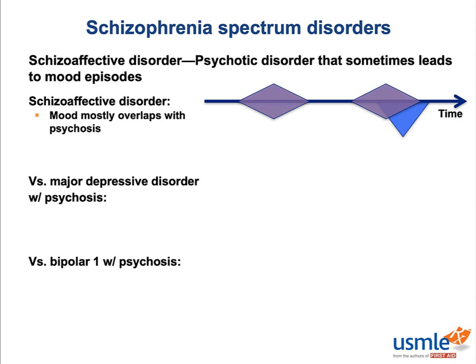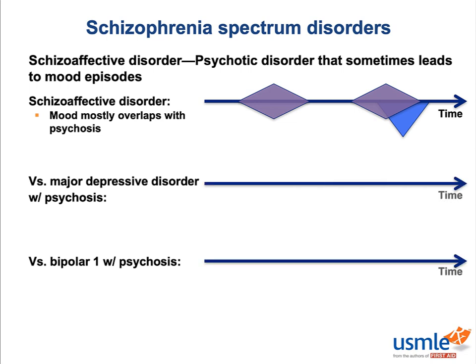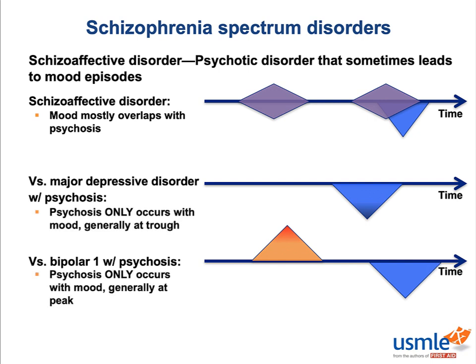What do you expect the overlap pattern of a mood disorder with psychosis to look like? Mood disorders only have psychosis as a part of the mood episode, generally either at the highest high or the lowest low. To further distinguish between the two, there is a caveat that states that schizoaffective disorder must have at least a two-week period of psychosis during which there is no mood disorder.